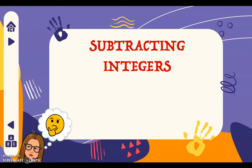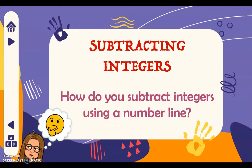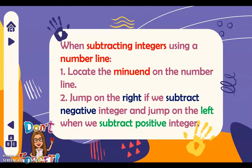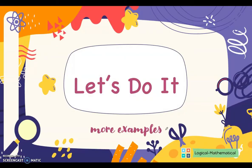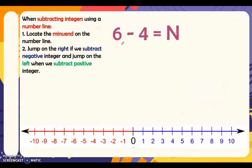Good day everyone. Today we will be talking about subtracting integers. Here are the steps when subtracting integers using a number line: locate the minuend on the number line. Next, jump to the right if we subtract a negative integer, and jump to the left if we subtract a positive integer. Let's have examples — as simple as 6 minus 4 is equal to n.